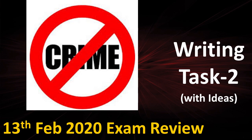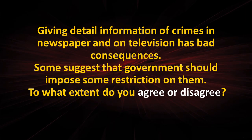My name is Naprit Singh and today I'm here with the review of the 13th February 2020 exam writing task 2. The task was about crime — specifically, that giving detailed information of crimes in newspapers and on television has bad consequences, and some suggest that the government should impose restrictions on them. To what extent do you agree or disagree?